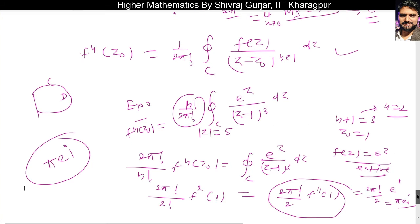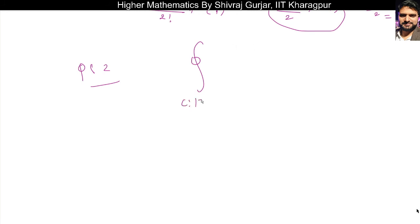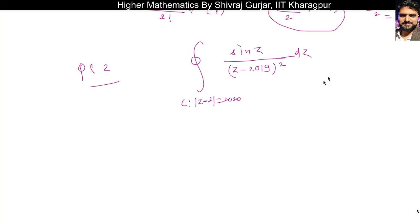Let us take one more example: evaluate the integral along C where modulus of (z minus 2) equals 20, of sin(z) divided by (z minus 2019)^2, dz. Comparing with the formula, z-naught is 2019 and n+1 is 2 so n is 1. We also need to verify that f(z) = sin(z) is analytic inside the circle, and that z-naught = 2019 lies inside the domain.